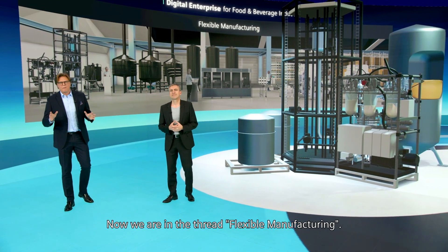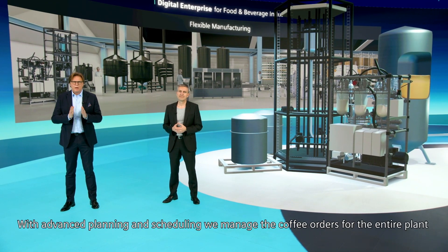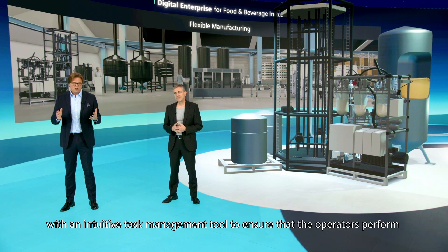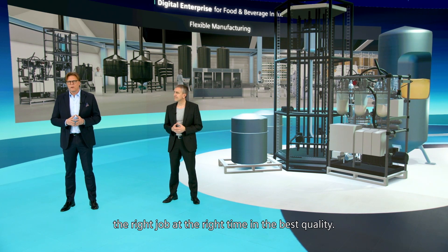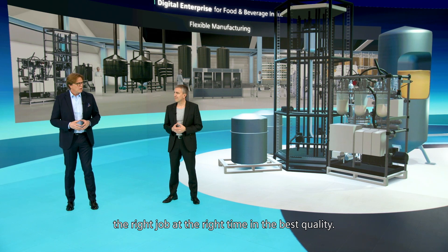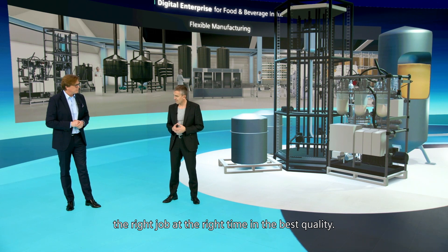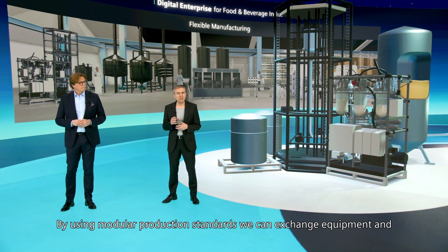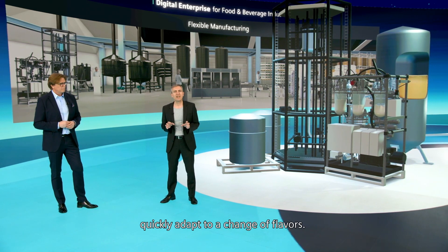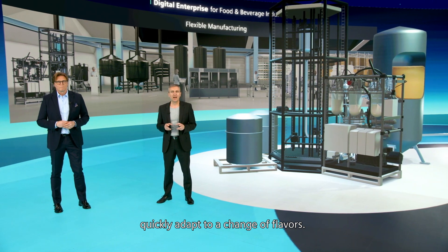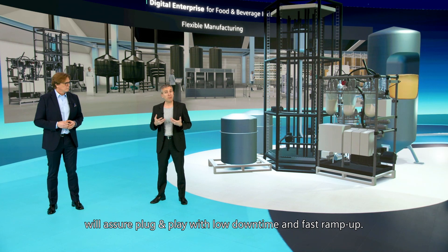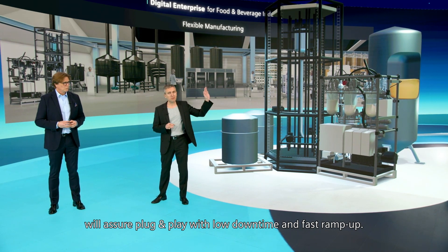Now we are in the thread flexible manufacturing. With advanced planning and scheduling, we manage the coffee orders for the entire plant with an intuitive task management tool, to ensure that operators perform the right job at the right time with the best possible quality. By using modular production standards, we can exchange equipment and quickly adapt to a change of flavors. The Module Type Package standardization — MTP — will ensure plug and play with low downtime and fast ramp up.